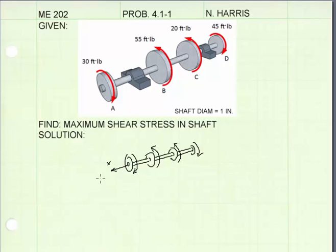In this case, if we're looking down on the shaft, positive would be counterclockwise. So that means the torque at A and D are both negative, and the torques at B and C are both positive.